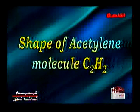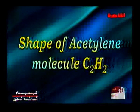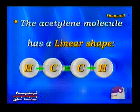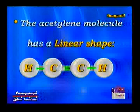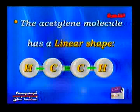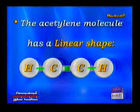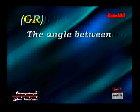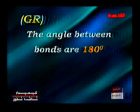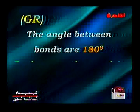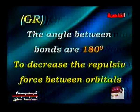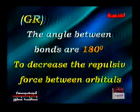The shape of the acetylene molecule: the acetylene molecule has a linear shape, as the screen shows, and the angle between the bonds is 180 degrees. Give reason: the angle between the bonds in acetylene is 180 degrees. The reason is to decrease the repulsive force between its orbitals.